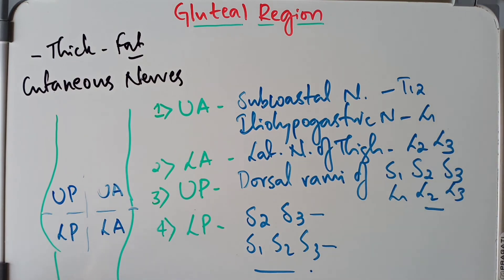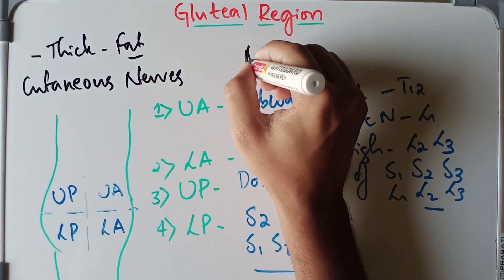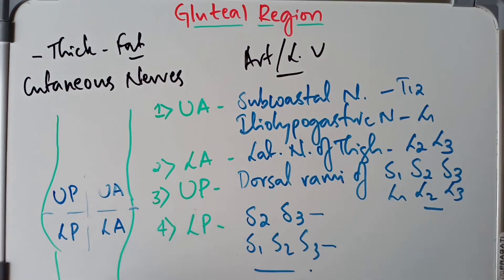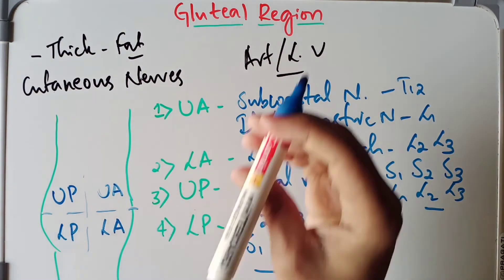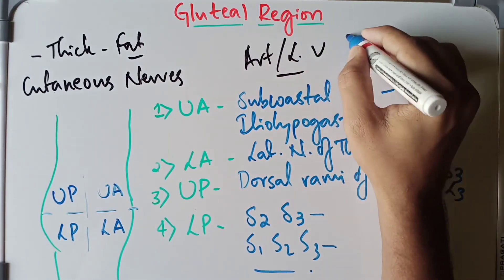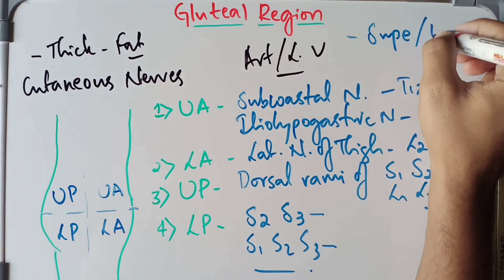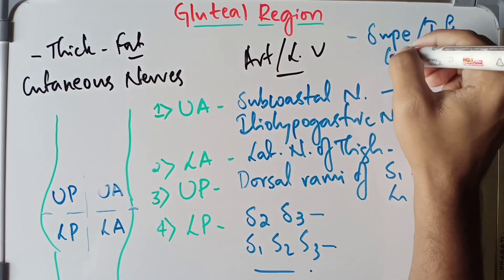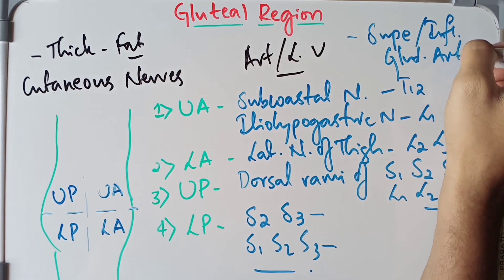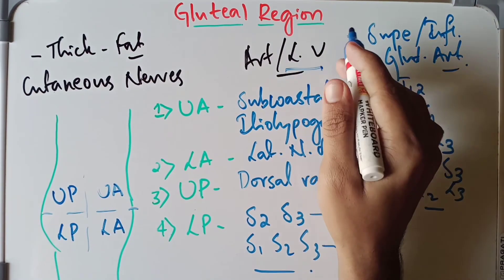Now a brief discussion about the cutaneous arteries and lymph vessels. The cutaneous arteries supplying the gluteal region are derived from the superior and inferior gluteal arteries.